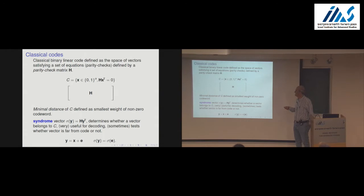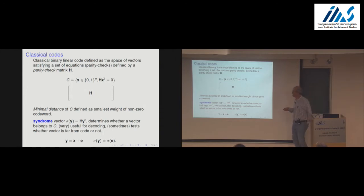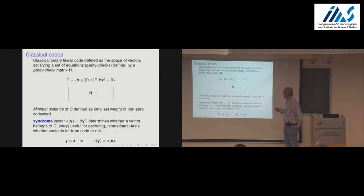One of the main parameters — the parameter that differentiates coding theory from linear algebra — is the distance parameter. The minimal distance of a code is the smallest Hamming weight of a codeword; think of it as the smallest weight of a vector with zero syndrome. Think of vectors as potential error vectors.